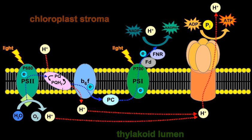The reaction center is in the thylakoid membrane. It transfers light energy to a dimer of chlorophyll pigment molecules near the periplasmic or thylakoid lumen side of the membrane. This dimer is called a special pair because of its fundamental role in photosynthesis. This special pair is slightly different in PSI and PSII reaction centers. In PSII, it absorbs photons with a wavelength of 680 nm, and is therefore called P680. In PSI, it absorbs photons at 700 nm, and is called P700.